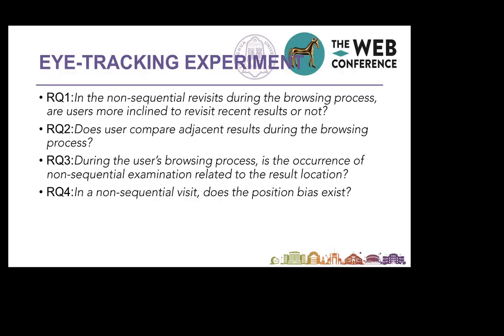First, we introduce four research questions of our eye-tracking experiment. Research question 1: in the non-sequential revisits during the browsing process, are users more inclined to revisit recent results? Research question 2: do users compare adjacent results during the browsing process? Research question 3: is the frequency of non-sequential examination related to result location? Research question 4: in a non-sequential revisit, does position bias exist?